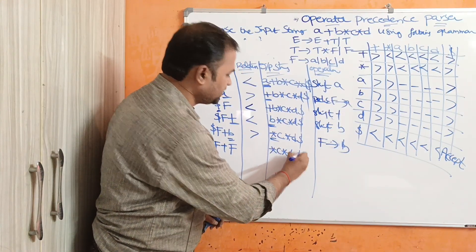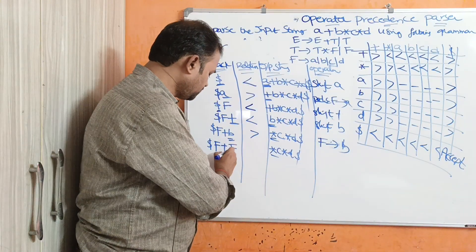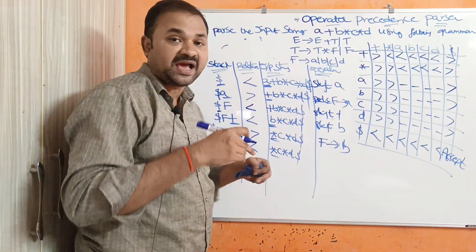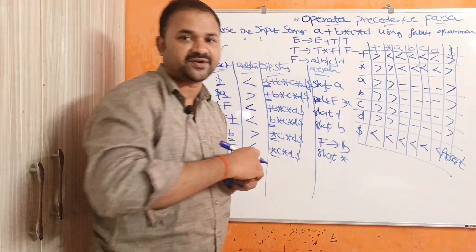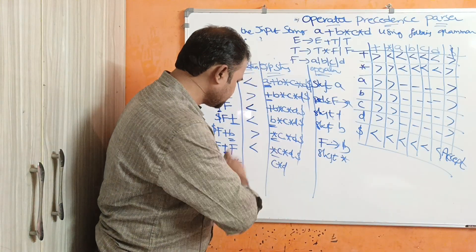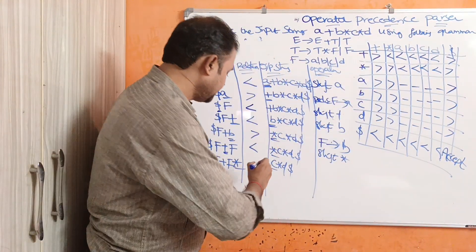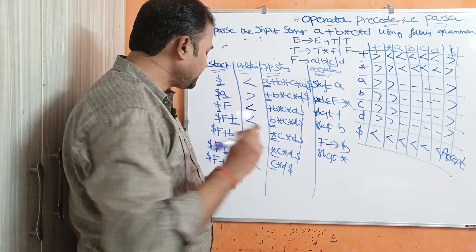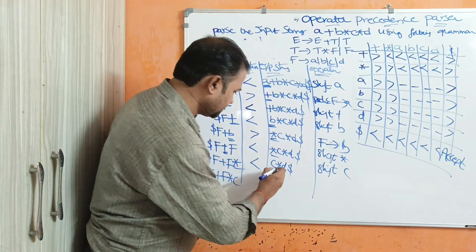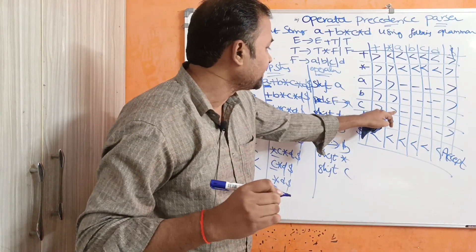Top of stack is F plus, input symbol is B. Plus vs B means less than, so B has higher priority — shift B. Stack becomes dollar F plus B. Remaining input: star C star D dollar. Top of stack is B, input symbol is star — B vs star means greater than. Reduce B to F. Stack becomes dollar F plus F. Top is F (non-terminal), so move left — compare plus and star: less than, so shift star.